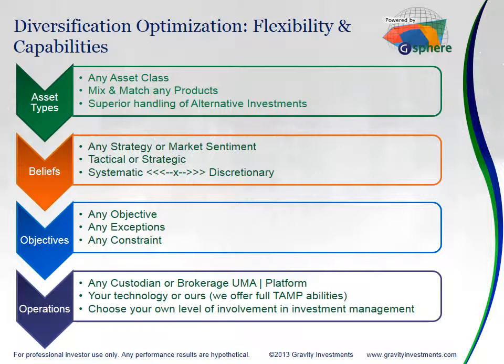Objectives. We think of objectives as being total return, risk-adjusted return, income. They could also be a little more esoteric — whenever we're talking about omega functions, alphas, or betas. Whatever it is, we haven't found an objective that is incompatible with diversification optimization.